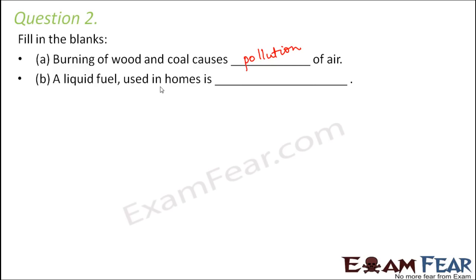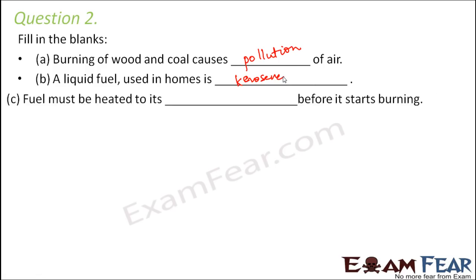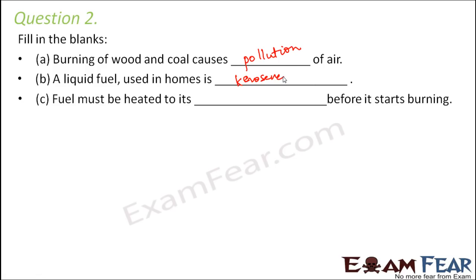A liquid fuel used in homes — one example is kerosene, which is used to light lamps. Normally you have other fuels like petrol and diesel, but we do not really use them at home. Fuel must be heated to its dash before it starts burning — that blank is the ignition temperature. Any fuel has to be heated until it reaches its ignition temperature.